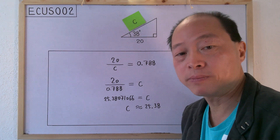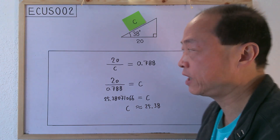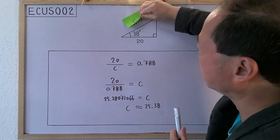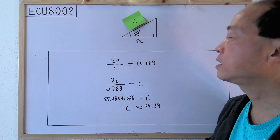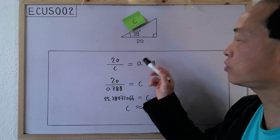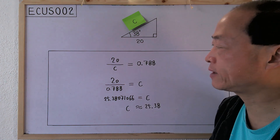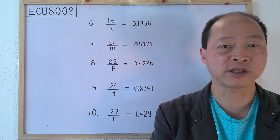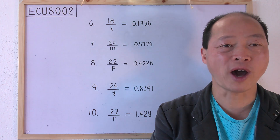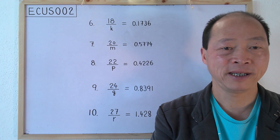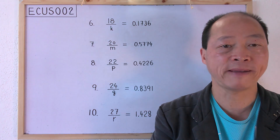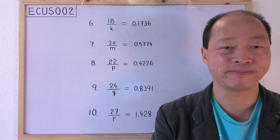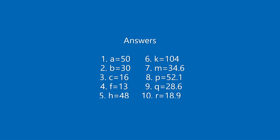Let's see if the number behind c is really 25.38. Yes, it is. This kind of equation can be easily solved because the number on the right and the number at the denominator form a multiplication pair and they are interchangeable. I'd like you to solve five more equations of the same type as exercise — correct your answers to three significant figures. The answers will be given at the end of this video. Thank you for watching this video.